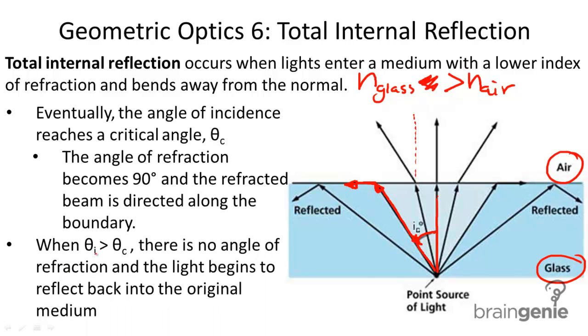When the angle of incidence is greater than the critical angle, when you go beyond the critical angle, there is no angle of refraction and the light begins to reflect back into the original medium.